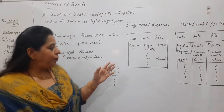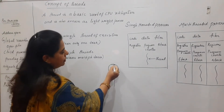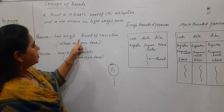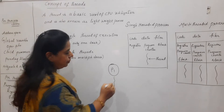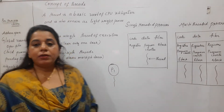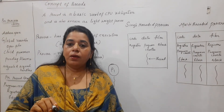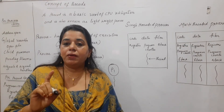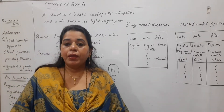Now a process, if at all there is a process P1, it has got a single thread of execution. Any process you take, it is having by default one thread — we call it a single thread of execution.